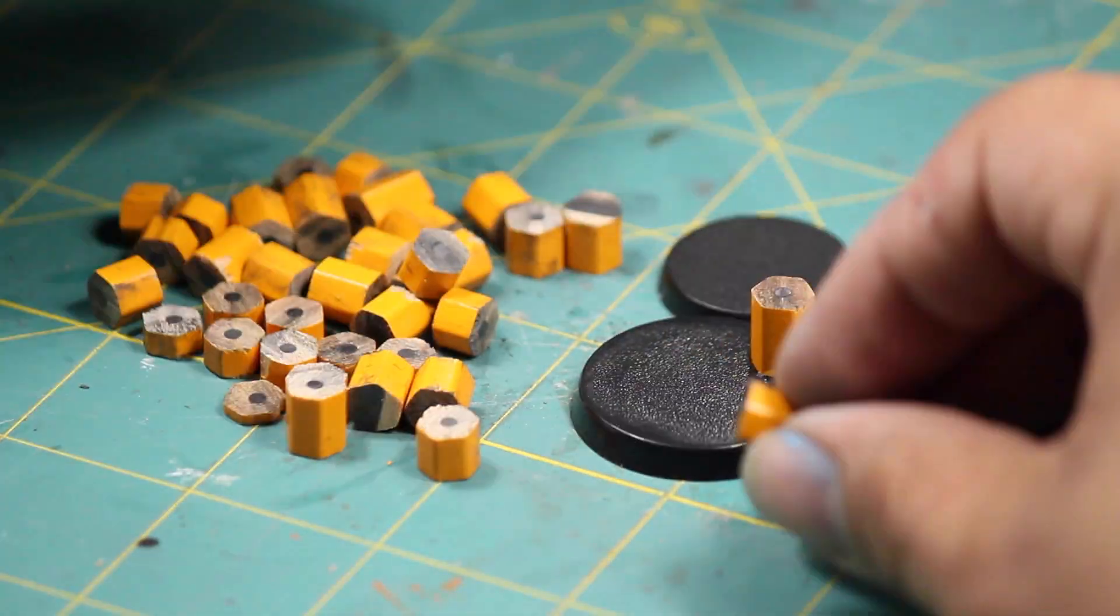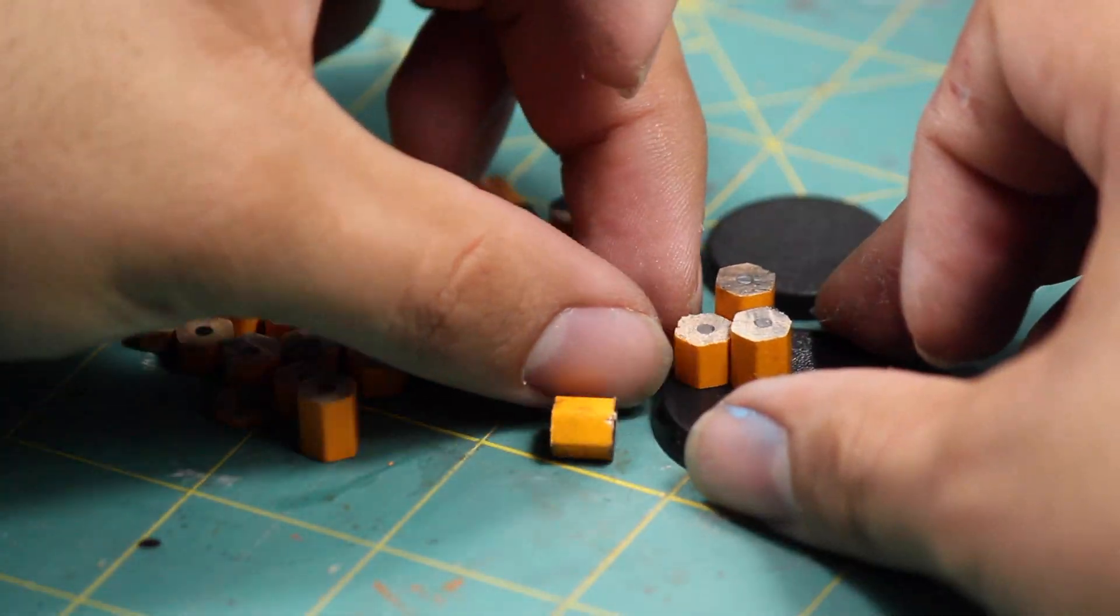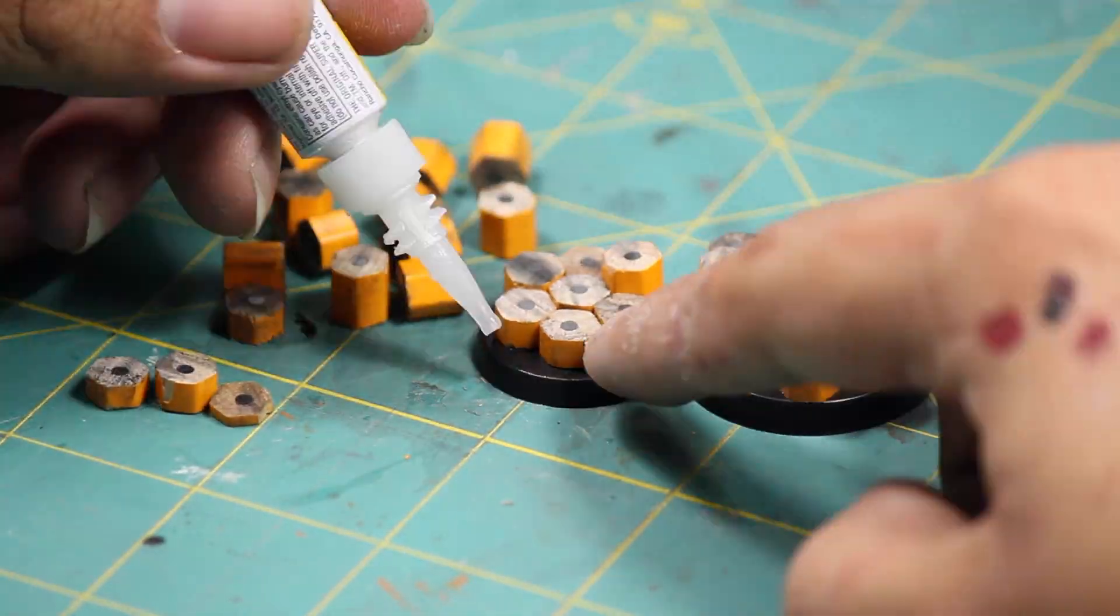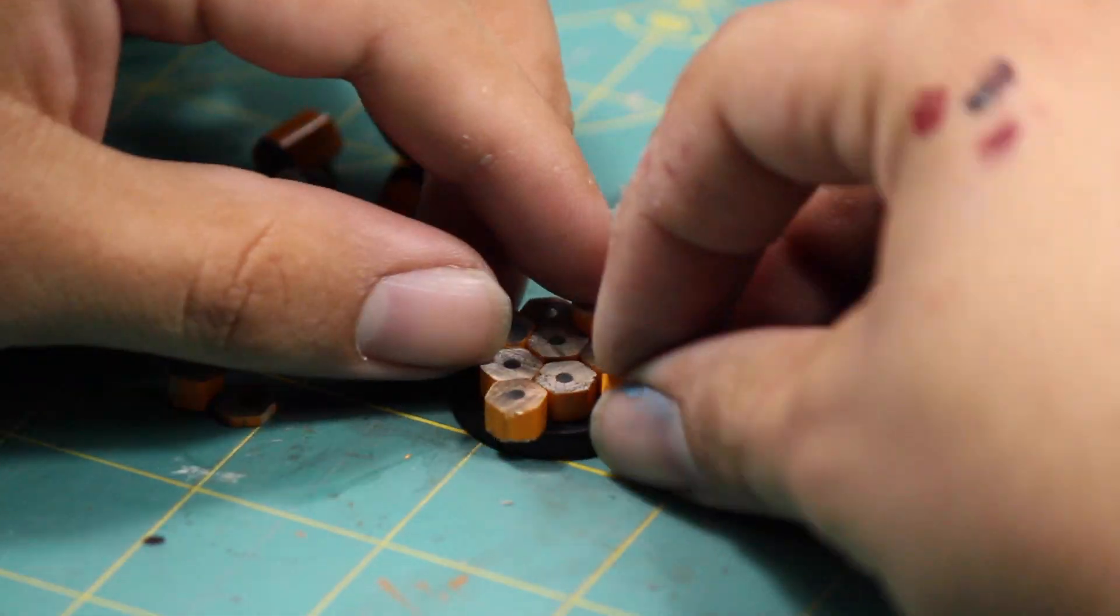Then I began randomly super gluing the pencil cutoffs onto the base making sure that each piece nested nicely against the others and keep in mind the model's feet and make sure there is a flat enough space for it to go.